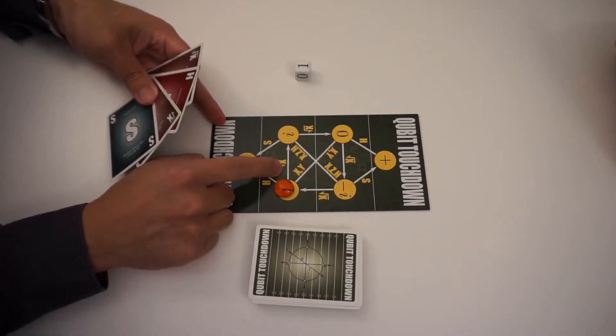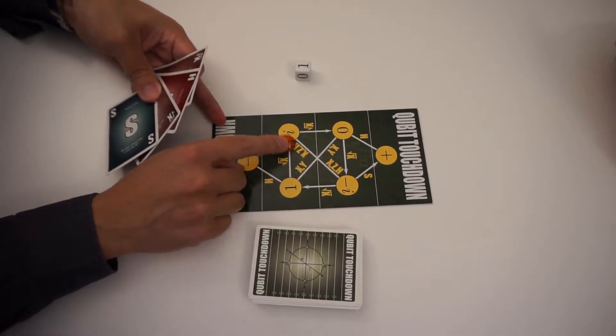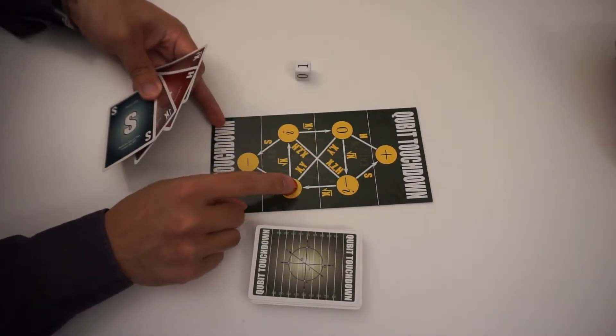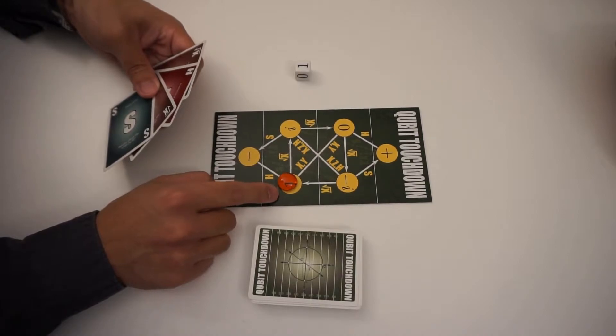If they play the square root of X, you see how there's an arrow, so it would move over there. If they played an X or Y, it would move down there. And if it's otherwise not labeled, nothing happens.